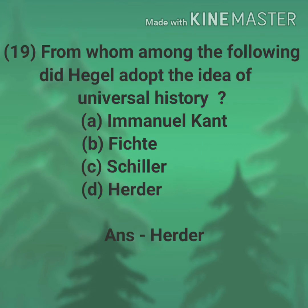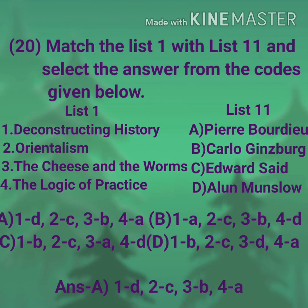Question number 19: From whom among the following did Hegel adopt the idea of universal history? Options: Immanuel Kant, Fichte, Schiller, Herder. Answer: Herder.